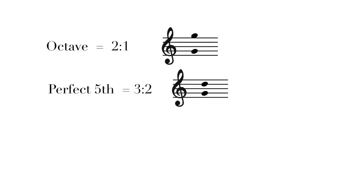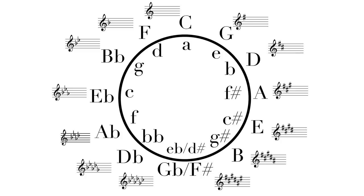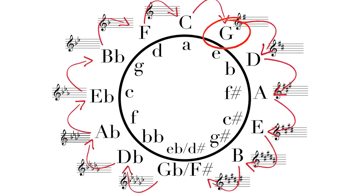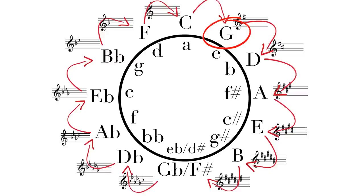We've established that the octave is 2 to 1, and that the perfect fifth is 3 to 2. We all pretty much universally agree that we like those two intervals to be in tune. We also know from the circle of fifths that if we keep going up a perfect fifth, we end up in the same place eventually. So, what if we had a tuning system where we just kept multiplying by 3 over 2? We call this Pythagorean tuning.